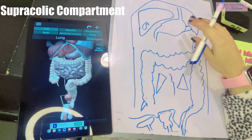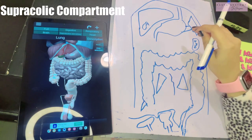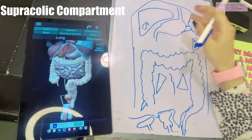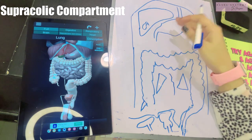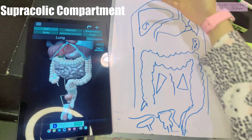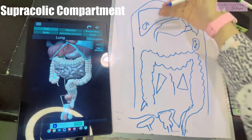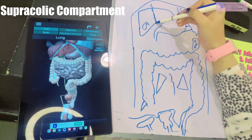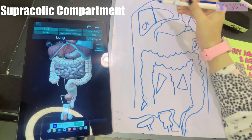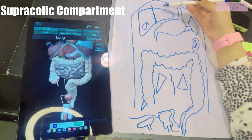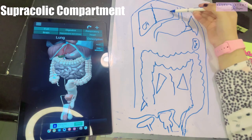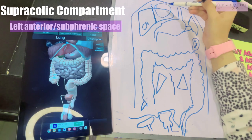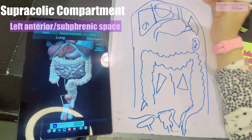The first spaces in the supracolic compartment are the subphrenic spaces — the right and the left subphrenic spaces. As their name says, they lie below the diaphragm. They're also known as the right and left anterior spaces because they lie anterior to the liver. The falciform ligament divides them into left and right parts. The left anterior or left subphrenic space lies between the diaphragm and the left lobe of the liver.